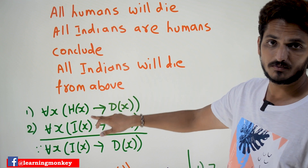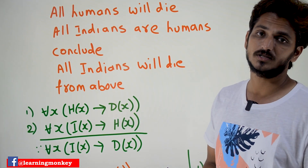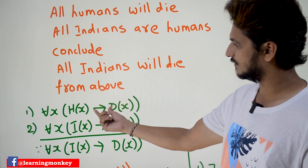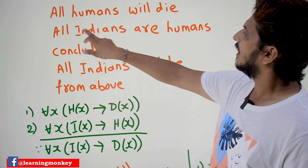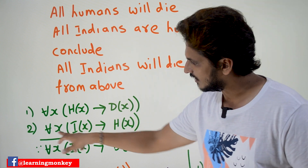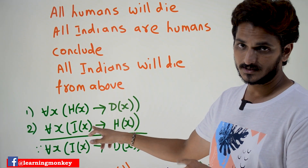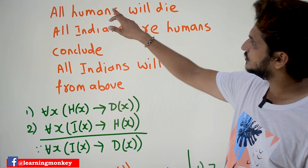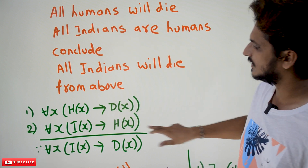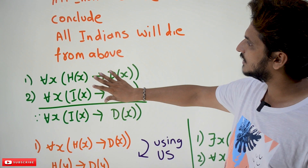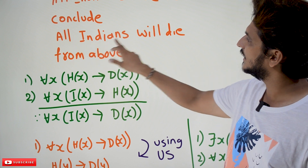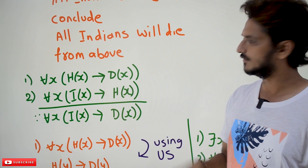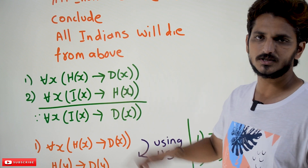We already discussed how we convert these statements to predicate logic previously, so we are not going into the details. All Indians are humans: for all x, i(x) implies h(x) — if x is an Indian, then x is a human. These are the two given statements written in predicate logic. From these two statements we need to conclude all Indians will die: for all x, i(x) implies d(x).